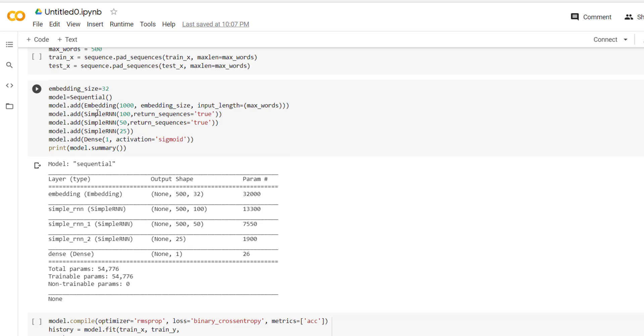After that we have created a model. That model is sequential model. First is embedding layer. After that we have used three simple RNN layers and ultimately we have used dense layer in the last to identify whether given piece of text is positive or negative.